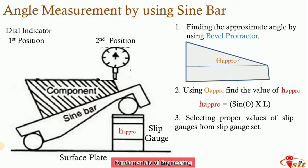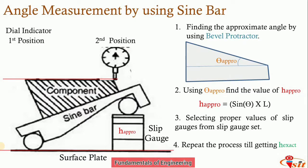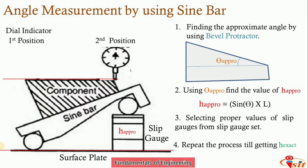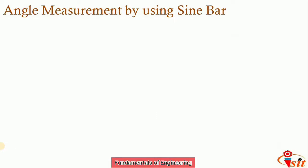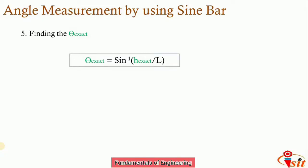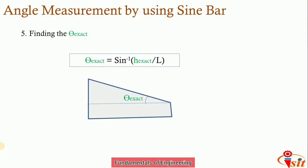Keep repeating the process — adjusting the slip gauge stack — until the dial indicator pointer remains at zero when moved from position one to position two, confirming the two surfaces are parallel. At that point you have H_exact. The exact angle is then calculated as: θ_exact = sin⁻¹(H_exact / L), where L is the center distance between the two rollers.